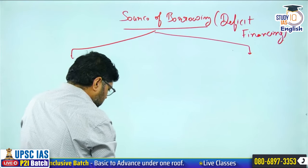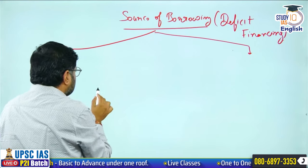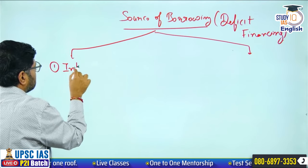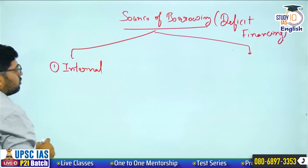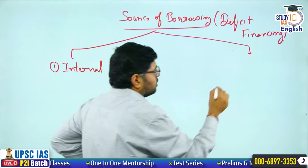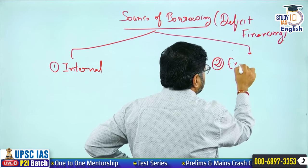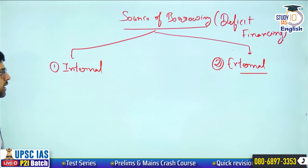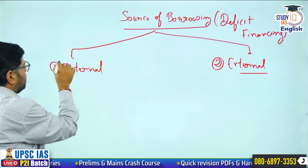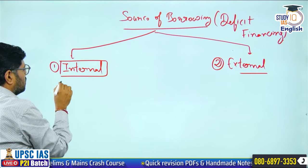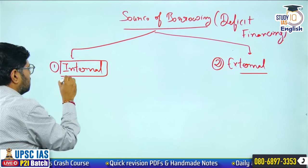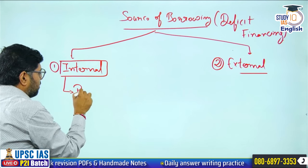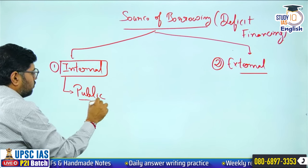There are two sources of borrowing. Number one is internal source of borrowing, and number two is external source of borrowing. Under internal source of borrowing, one option is that you can borrow from the public — the government has a choice to borrow from the public.